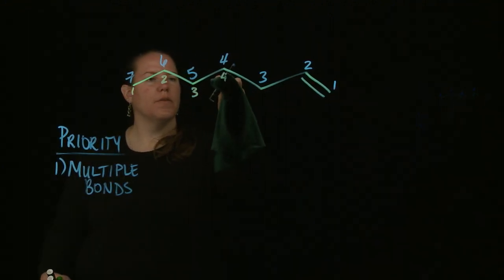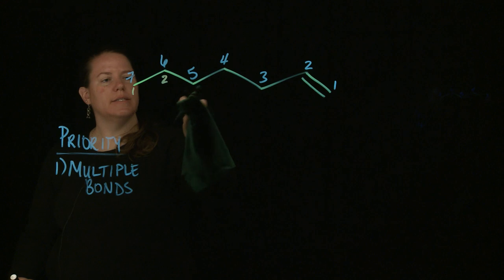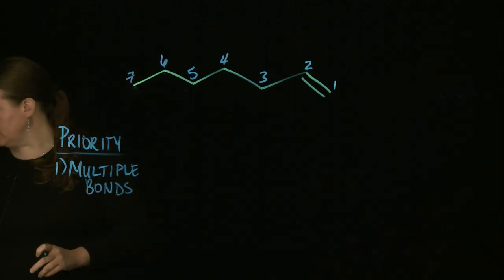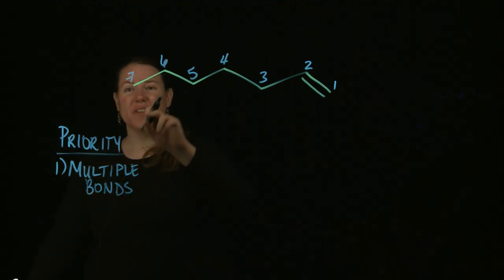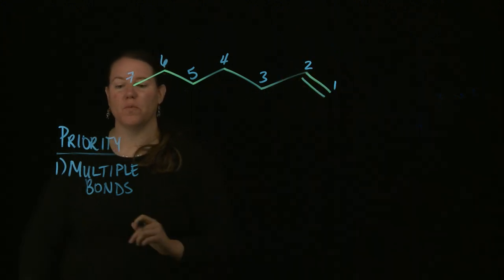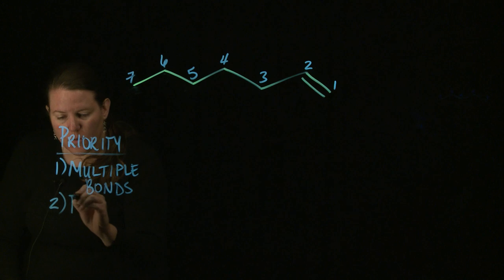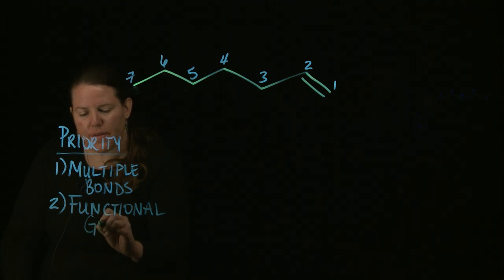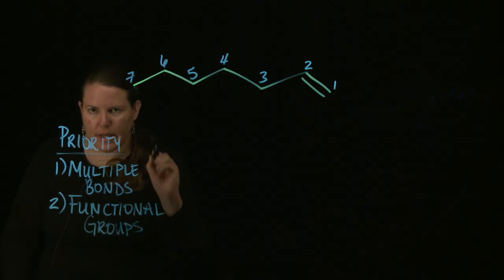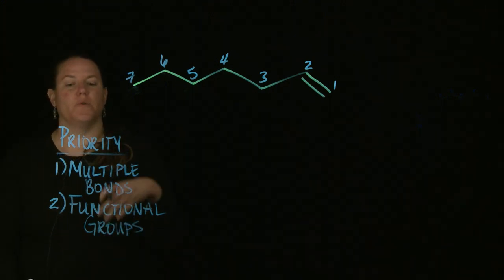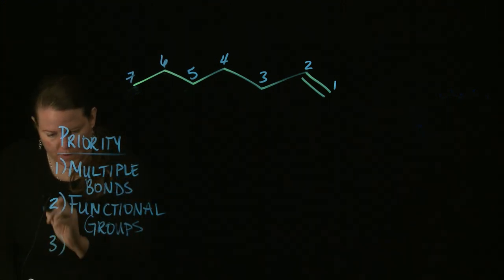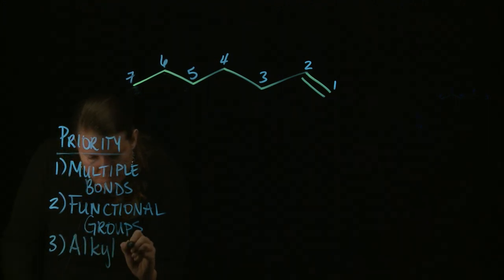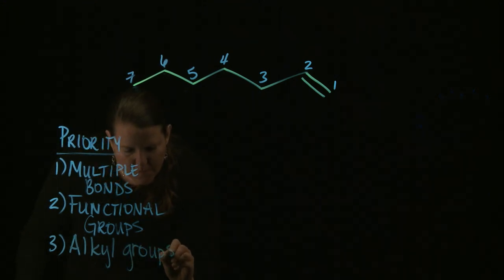Multiple bonds are first on the priority list. That means that this other numbering, the numbering from left to right, is not good. The reason why was because it had the double bond between positions six and seven, and when I talked about priority, I said it had to have the lowest number possible, which means that it has to be between one and two. Also on this list, we'll eventually get to functional groups. If you have a functional group with a multiple bond, obviously it's more important than both of those. And then, you have alkyl groups.